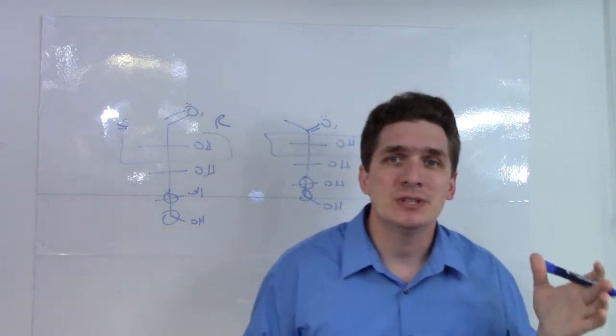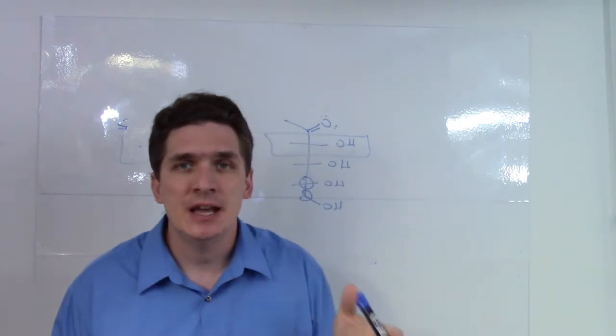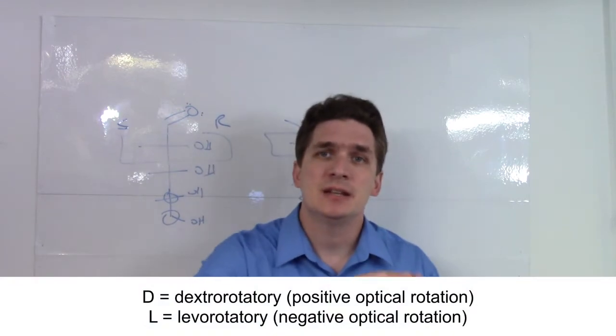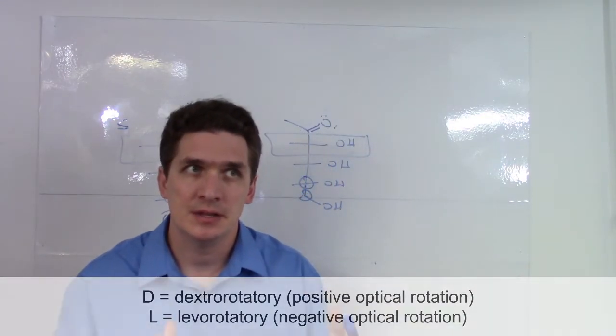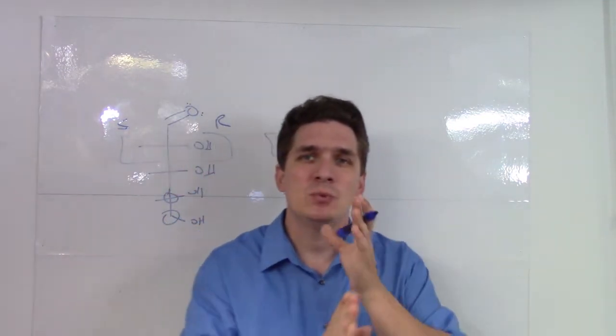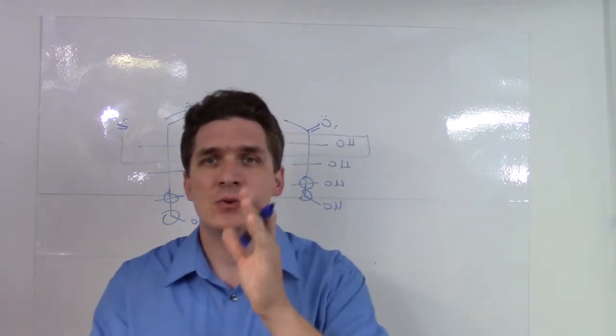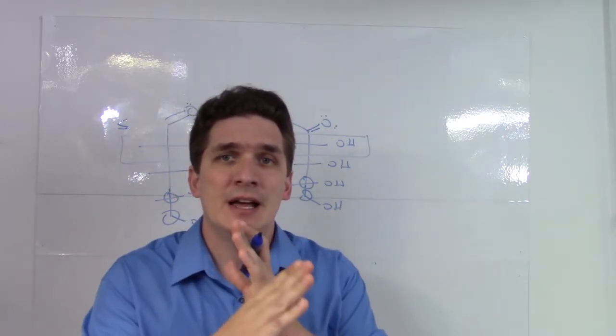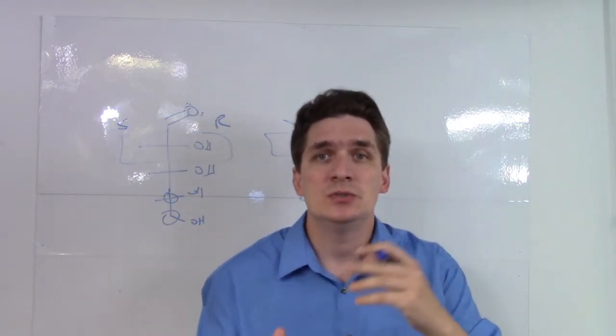What we actually use is the DL notation. And the DL refer to dextrorotatory and levorotatory. So dextrorotatory means that when we look at the polarized light going through the polarimeter, we'll actually turn to the right. We'll get positive rotation. If it goes left, we get levorotatory. It's moving towards the left.